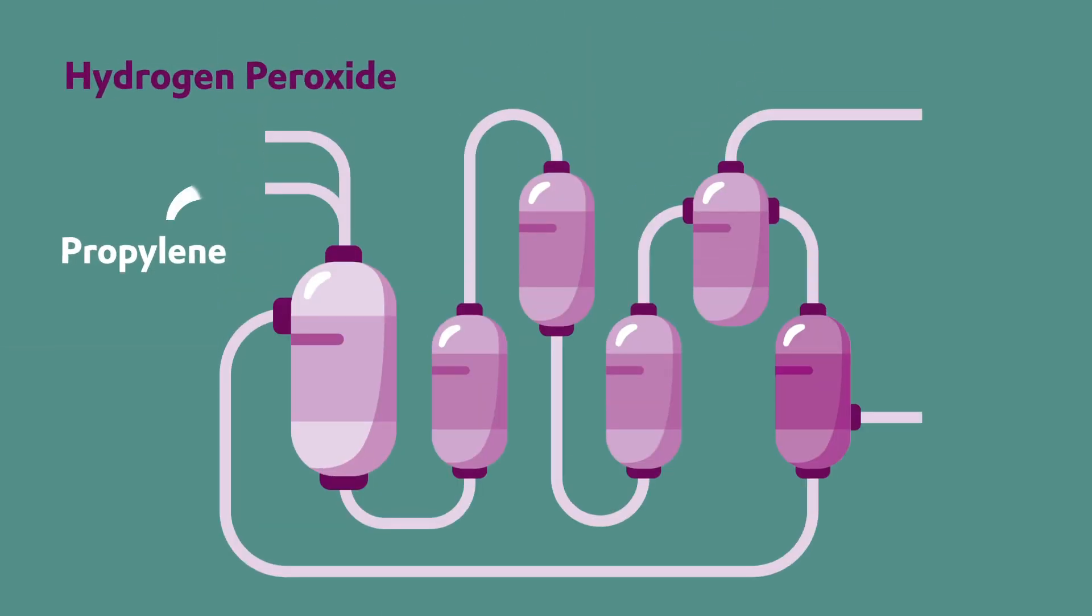The HPPO process enables cost efficient and eco-friendly production of propylene oxide. The only by-product is water.